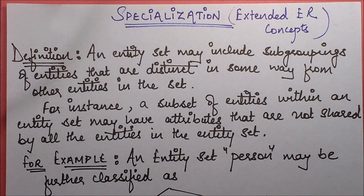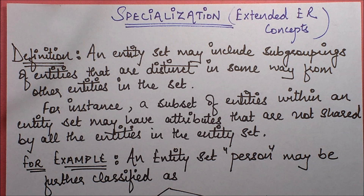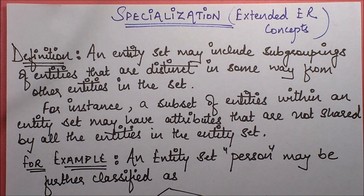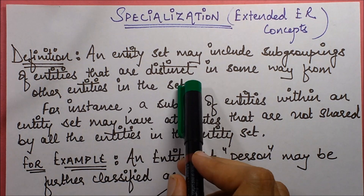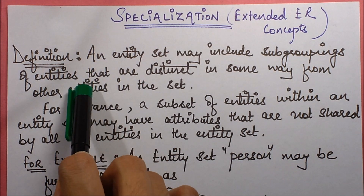Hello friends, in this session I'll be discussing the concepts of ER diagrams — specifically the extended concept of specialization. I'll also be covering the closely linked concepts of generalization and aggregation afterward. Let's start with specialization first. The definition is that an entity set may include subgroupings of entities that are distinct in some way from other entities in the set.